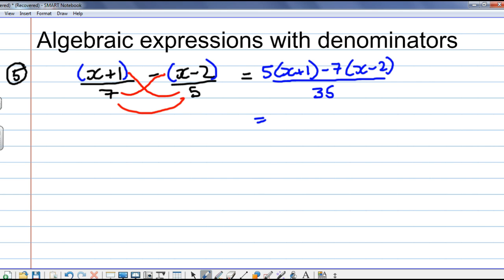Expanding the brackets here on the top, you get 5x plus 5. And now, be very careful, minus 7 times x is minus 7x. And then, minus 7 times minus 2 is plus 14. And if you're going to go wrong with these, that'll be it. It'll be that last symbol here. If you're going to make a mistake, you'll have written that as a minus.